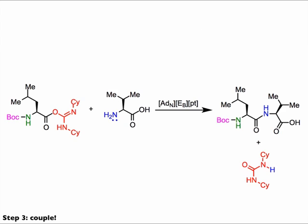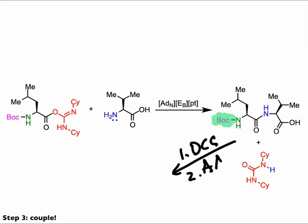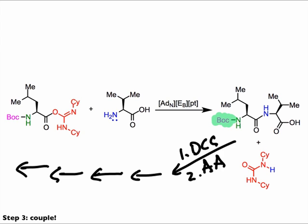Now the N-terminus remains blocked. To couple a second amino acid, all we need to do is activate the new C-terminus with DCC, then treat the activated electrophile with another equivalent of the next amino acid. We can repeat this process as many times as needed to secure our desired peptide sequence.